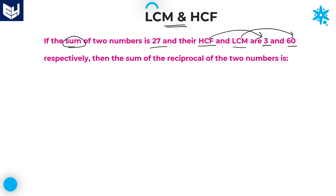The first and foremost point is: whenever two numbers' HCF is given, then definitely those two numbers are multiples of HCF. So I will take the first number as 3x and the second number as 3y, because HCF is given as 3. Therefore, the two numbers are multiples of HCF: first number 3x, second number 3y.